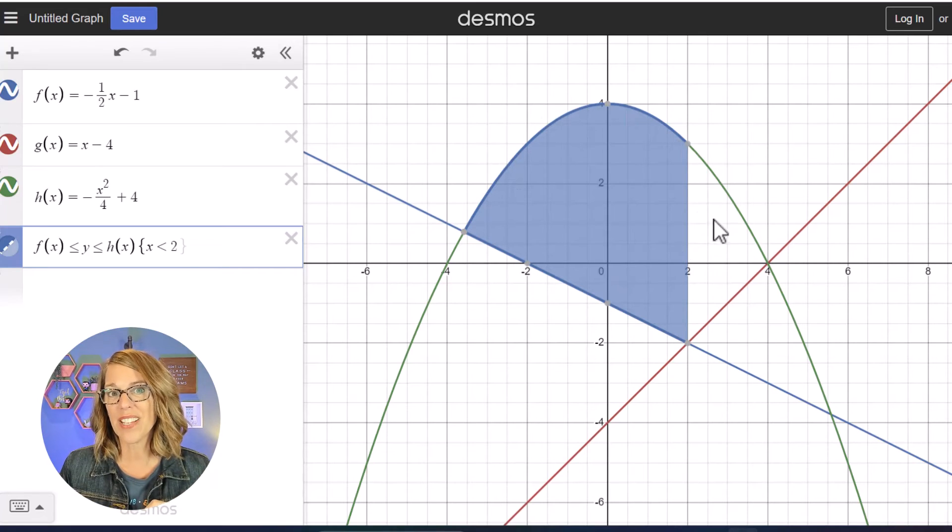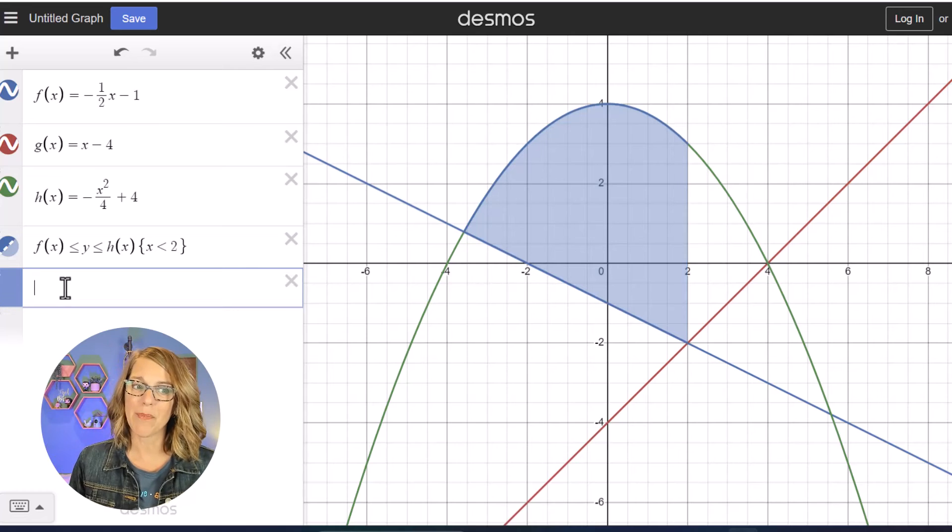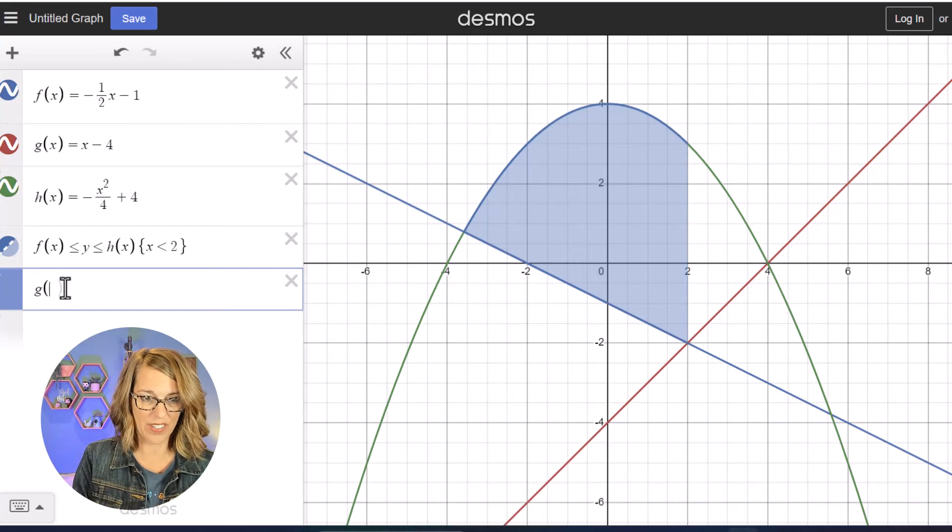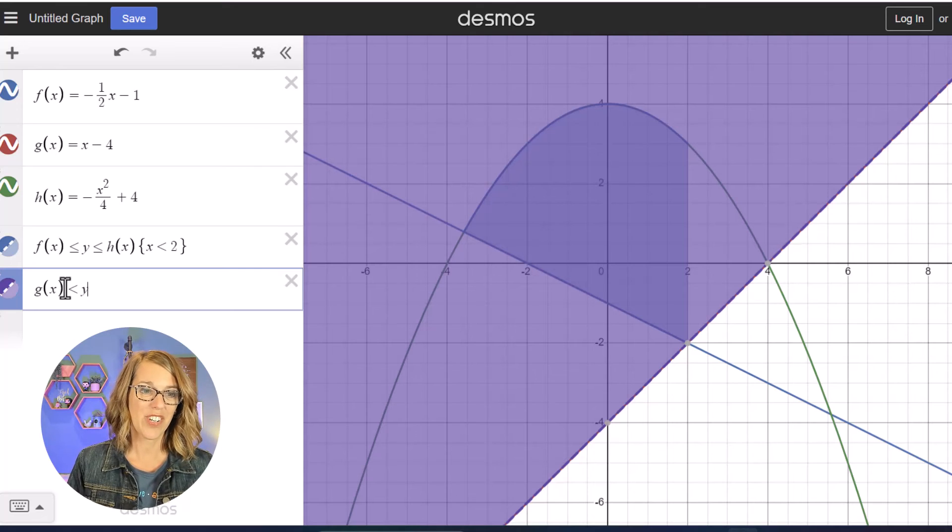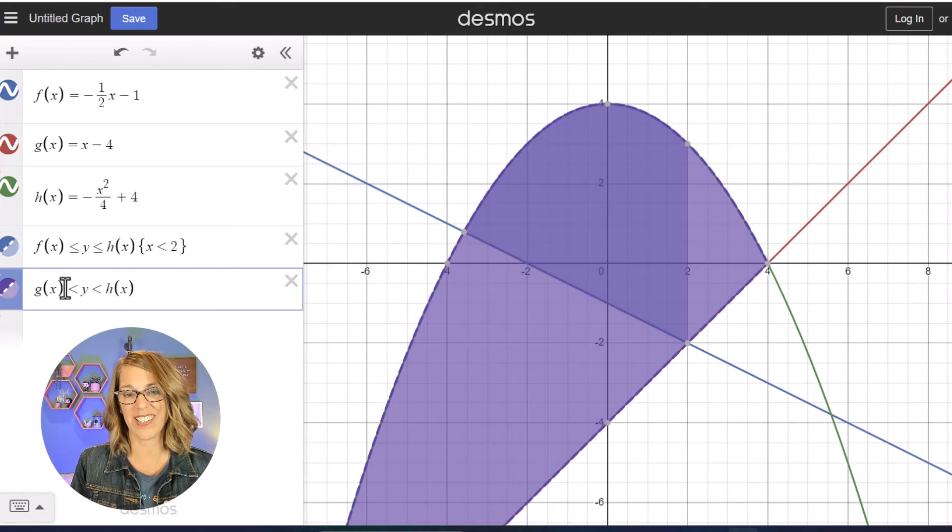So now I've got the part that's just between the blue line and the green parabola. If I go into the rest of my area here, this is going to be between the red line and the green parabola. Let's grab an empty cell and this time I want G of X as the lower, so G of X is less than my Y values which is less than my green parabola which is H of X.